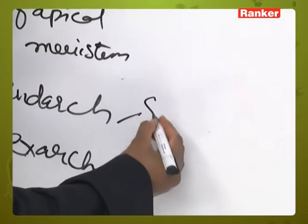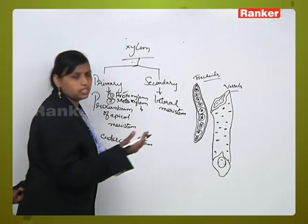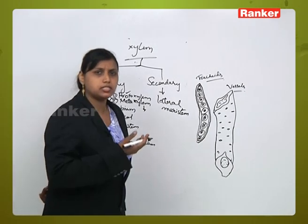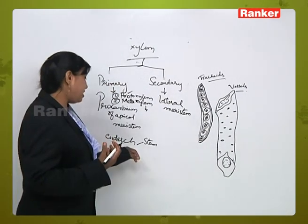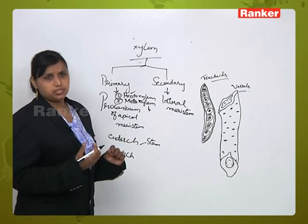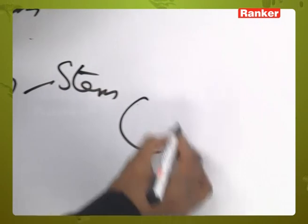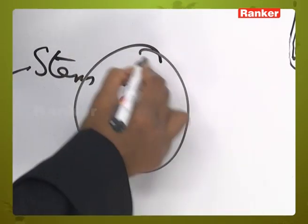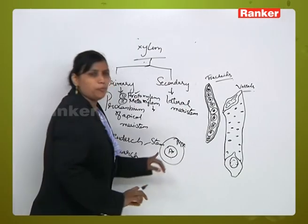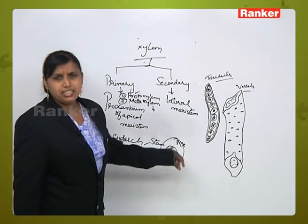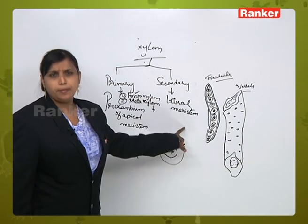In case of any stem section cutting, stem vascular tissue organization, xylem organization, you will see endarch vascular bundles. The arrangement of xylem is endarch. What does endarch mean? Endarch means protoxylem will be at the center and metaxylem will be towards the periphery.